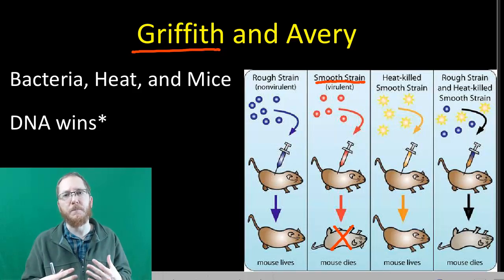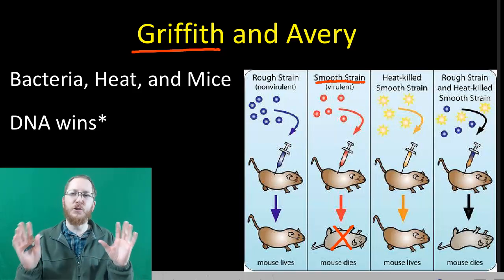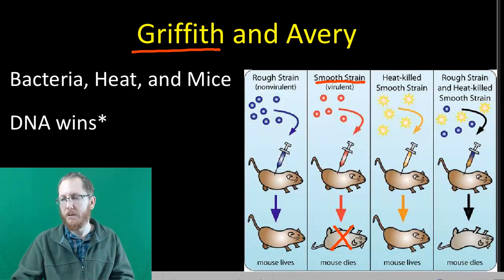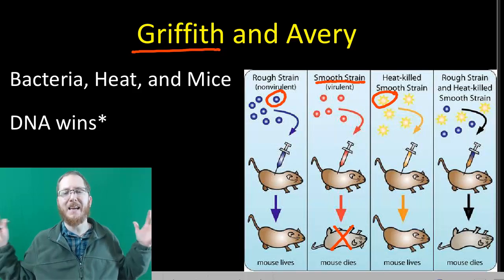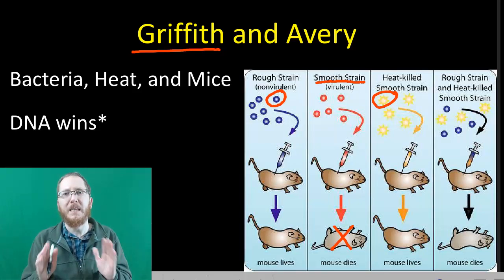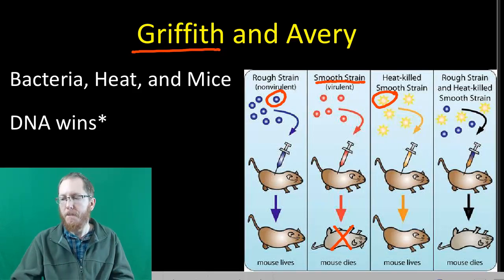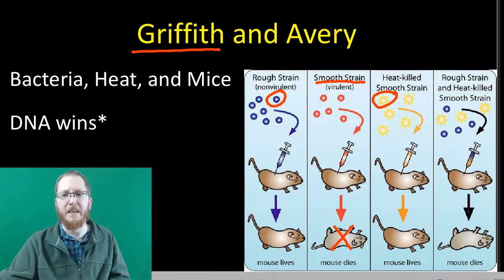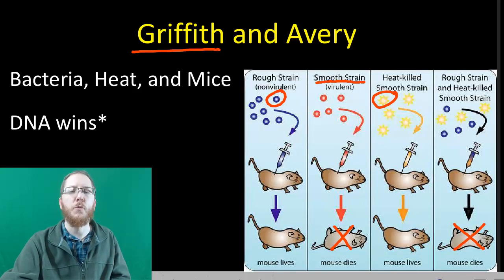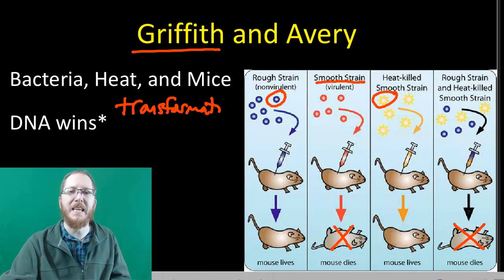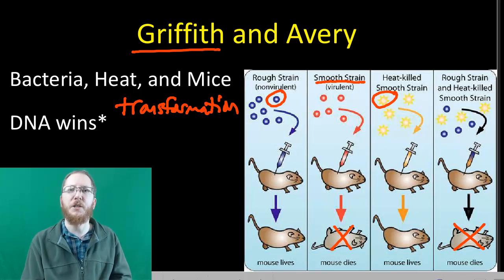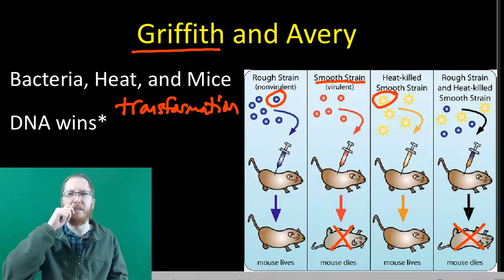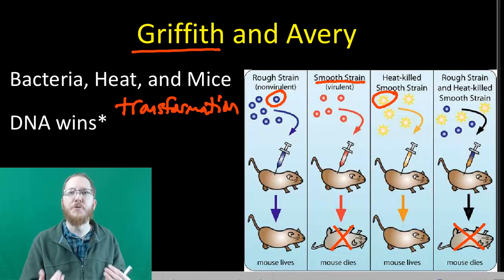And then for whatever reason, he had this genius stroke of, why don't I mix the non-lethal heat-killed stuff, so this stuff, with the non-lethal rough strain stuff, the one that lacks that capsule. So he mixed two things that each were non-lethal by themselves. But when he mixed them, he got a dead mouse. And so Griffith was the one who realized that something called transformation exists in bacteria. And what that means is that they can grab genetic material from their surroundings and use it. So it would be kind of like you guys sitting down in class, reaching up under the desk, seeing some gum, pulling it off, and just having at it. Bacteria can essentially do that.